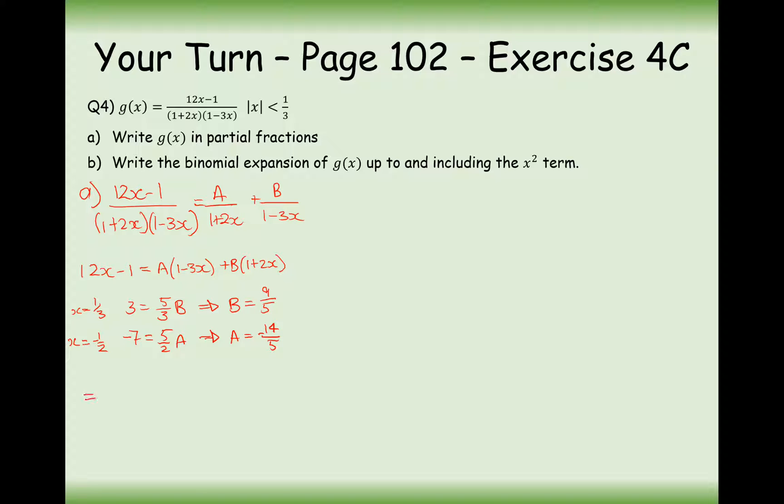So our question here, g of x, can be written as minus 14 over 5 times 1 plus 2x, add 9 over 5 times 1 minus 3x. Right, so part a done now then.